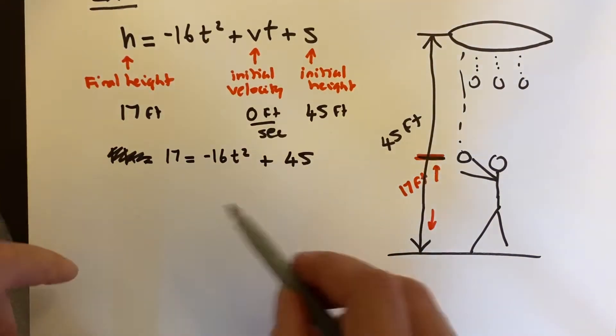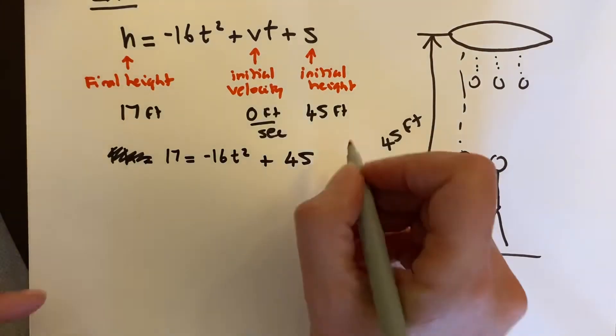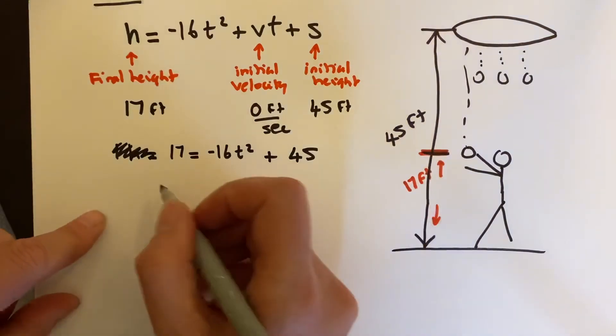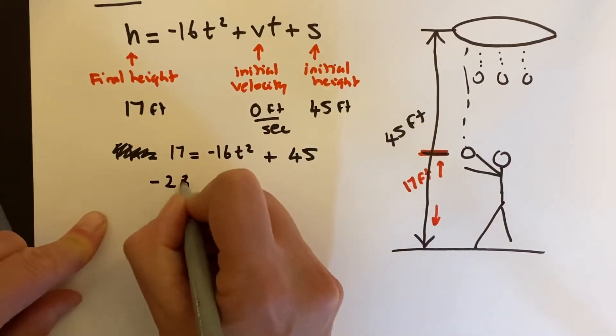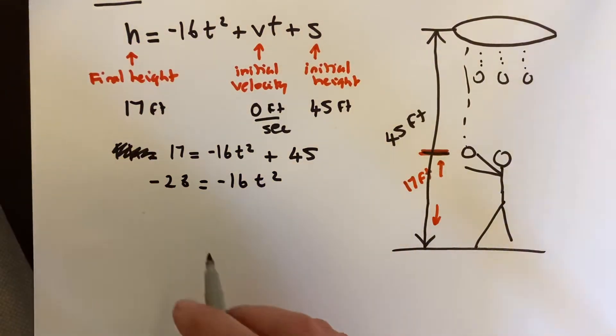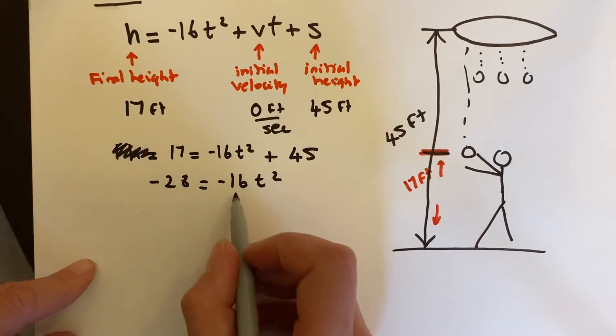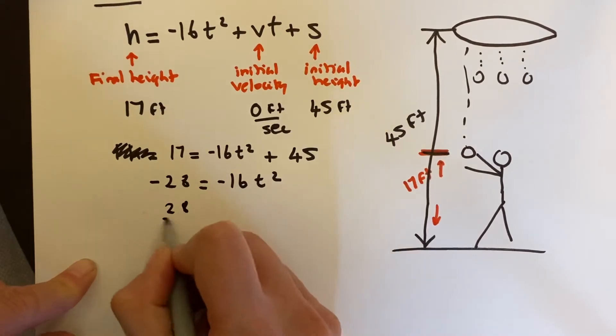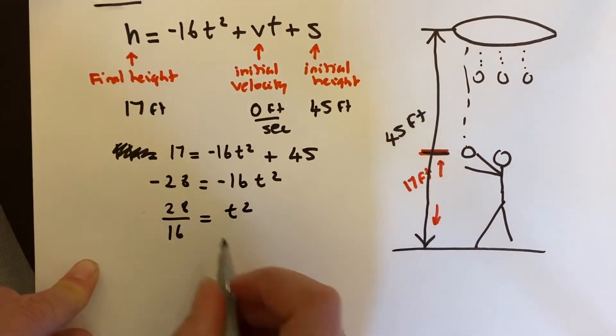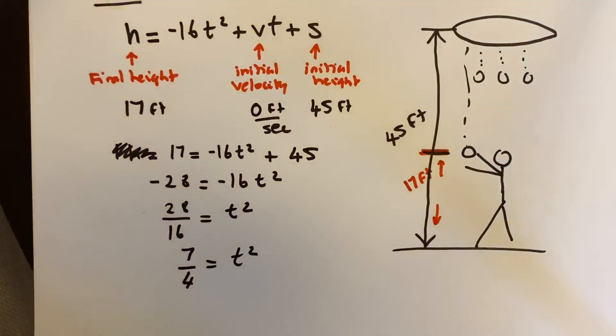My first step is to subtract 45 from both sides. When I subtract 45 over here, I get negative 28 equals negative 16t squared. All I have to do is divide both sides by negative 16. So I end up with 28 sixteenths equals t squared. I would simplify this, dividing both by 4, and get 7 over 4 equals t squared before taking the square root of both sides.